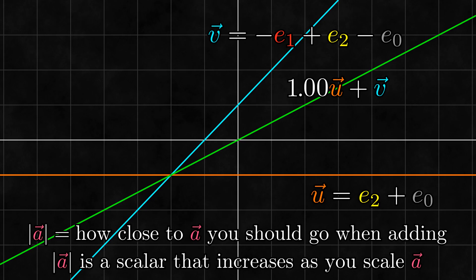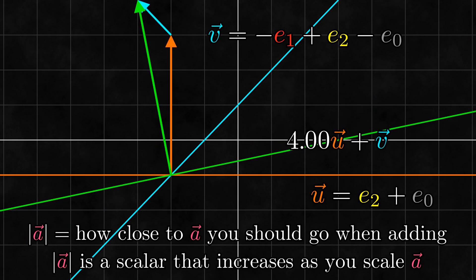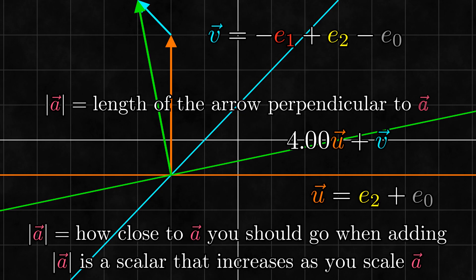We know that to find the sum, we need to find the perpendicular arrows and then add them. Now as we scale u, the arrow associated with u gets longer. Notice that the greater the length of the arrow is, the closer the sum gets to the line. Furthermore, the length of the arrow is a scalar that increases as we scale the line. Thus, the length of the perpendicular arrow is a scalar that satisfies these two properties that we want the magnitude to have. Because of this, we define the magnitude of a line to simply be the length of its perpendicular arrow.